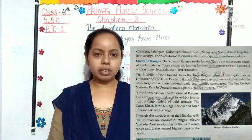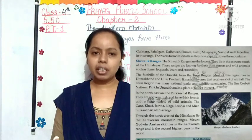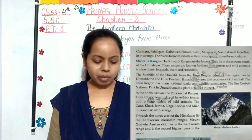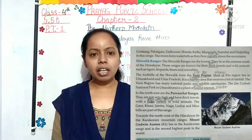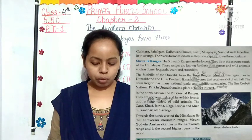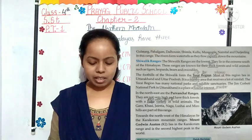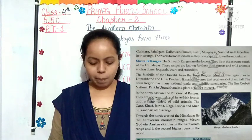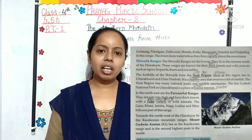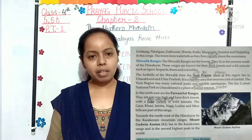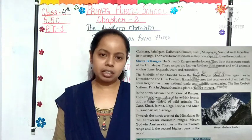The Shivalik range are the lowest. This is the lowest part of the Himalaya, situated in the extreme south. They lie in the southernmost part of the Himalaya. These ranges are known for their thick forests and wild animals such as tiger, leopard, bears and crocodile.